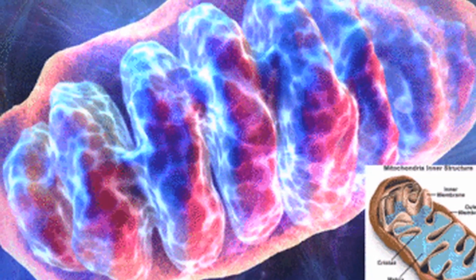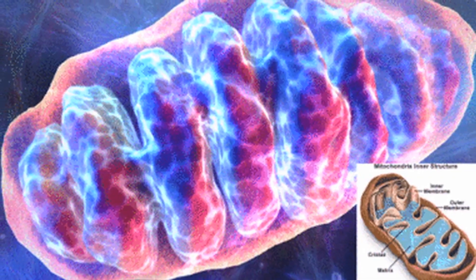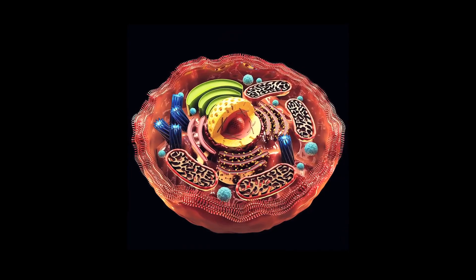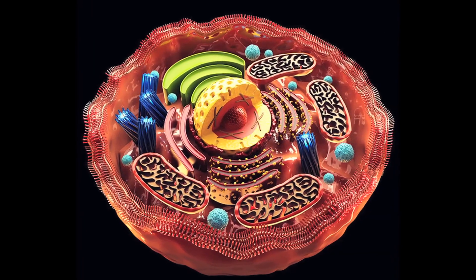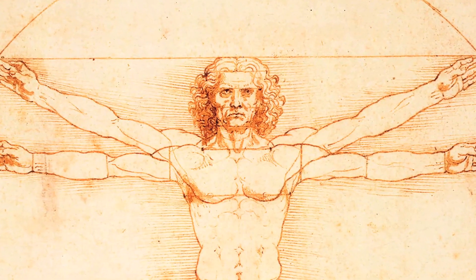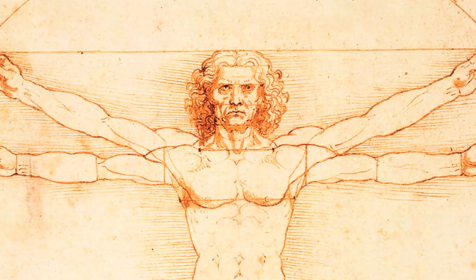The negative ionized hydrogen from NADH is used by the mitochondria to turn ADP into ATP — adenosine triphosphate — which is the energy molecule of the human body. Every cell of the trillions of cells in our bodies contains mitochondria, and the purpose of the mitochondria is to create ATP, or adenosine triphosphate.